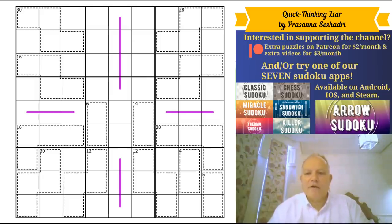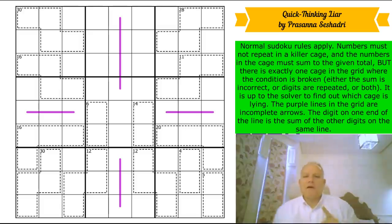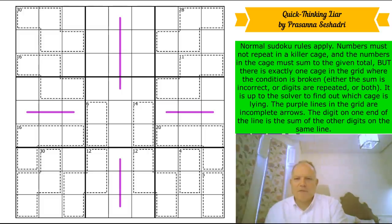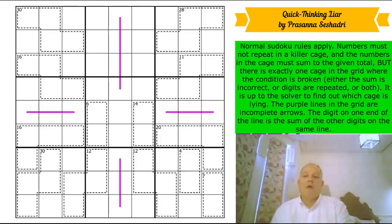Let's look at the rules for Prasanna's puzzle, Quick Thinking Liar. This was apparently part of a speed setting competition. Simon's already done the winner of this competition, but Prasanna did this as well. Prasanna said they'd only used half the time—this was set in half an hour, so I guess that's my target for solving it. Prasanna is absolutely world class.